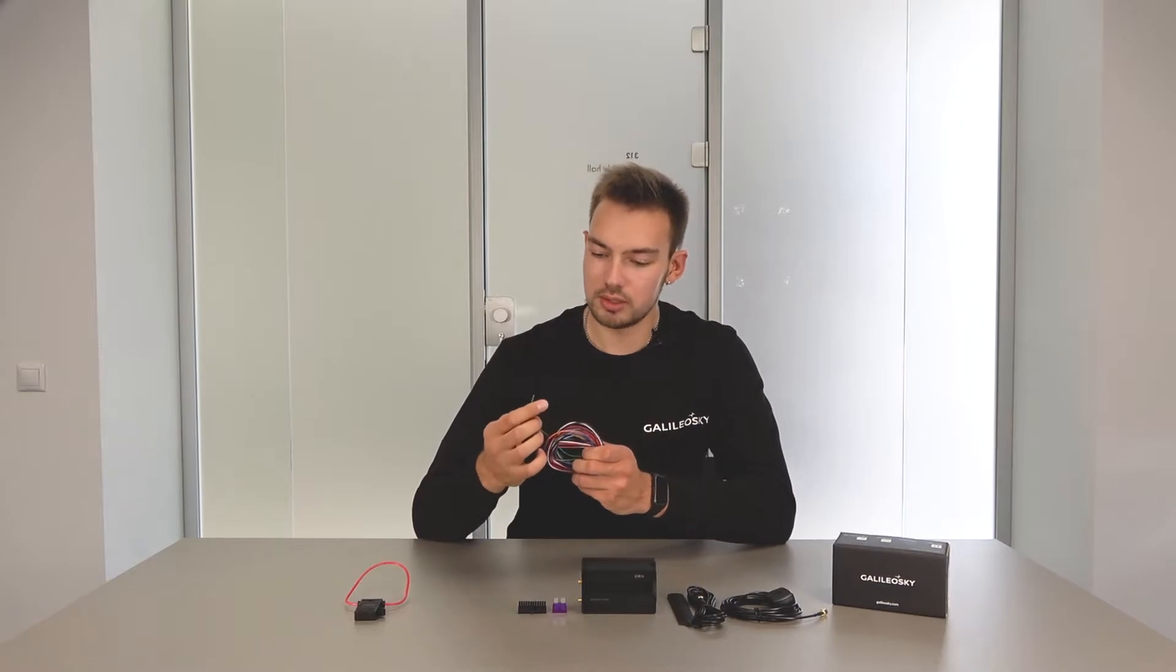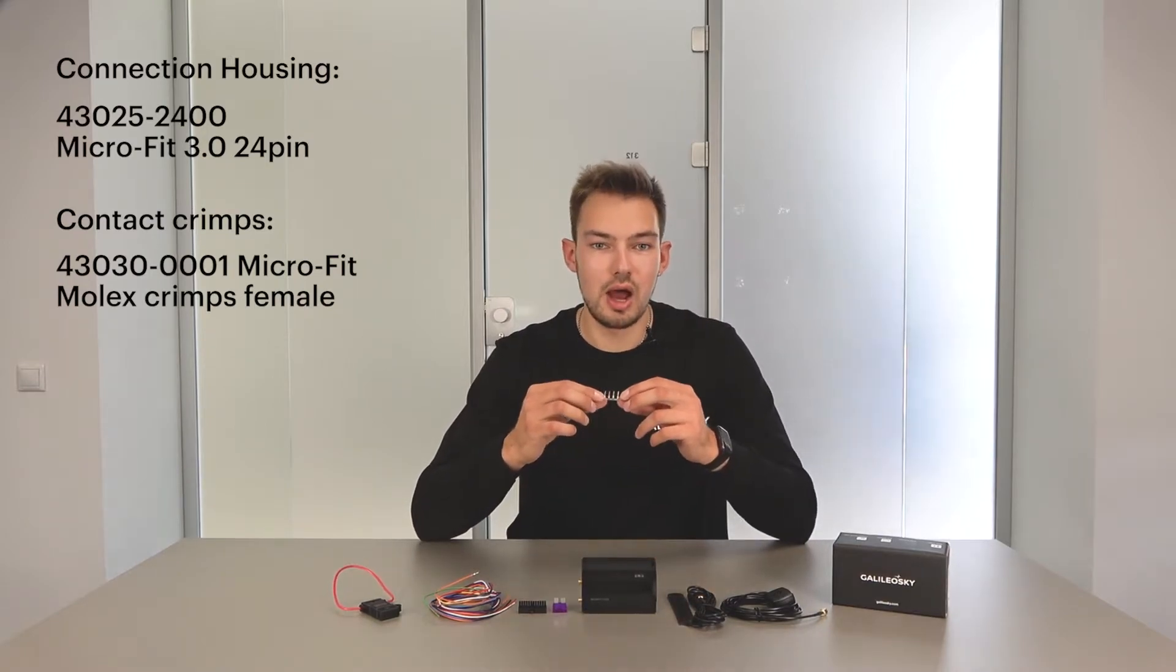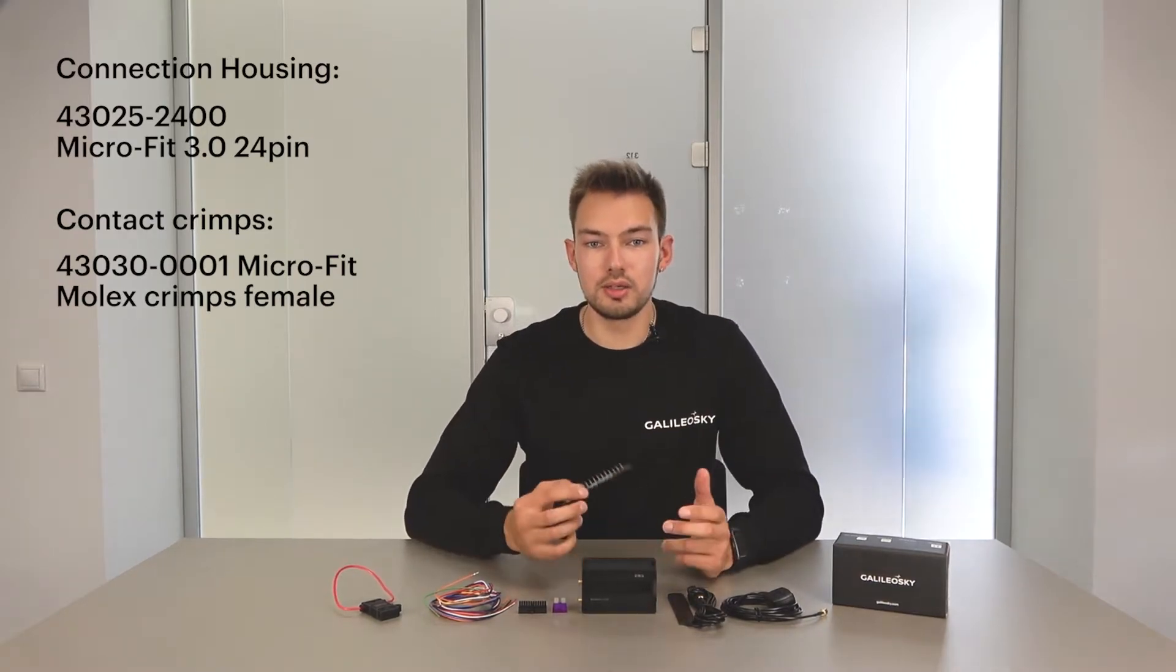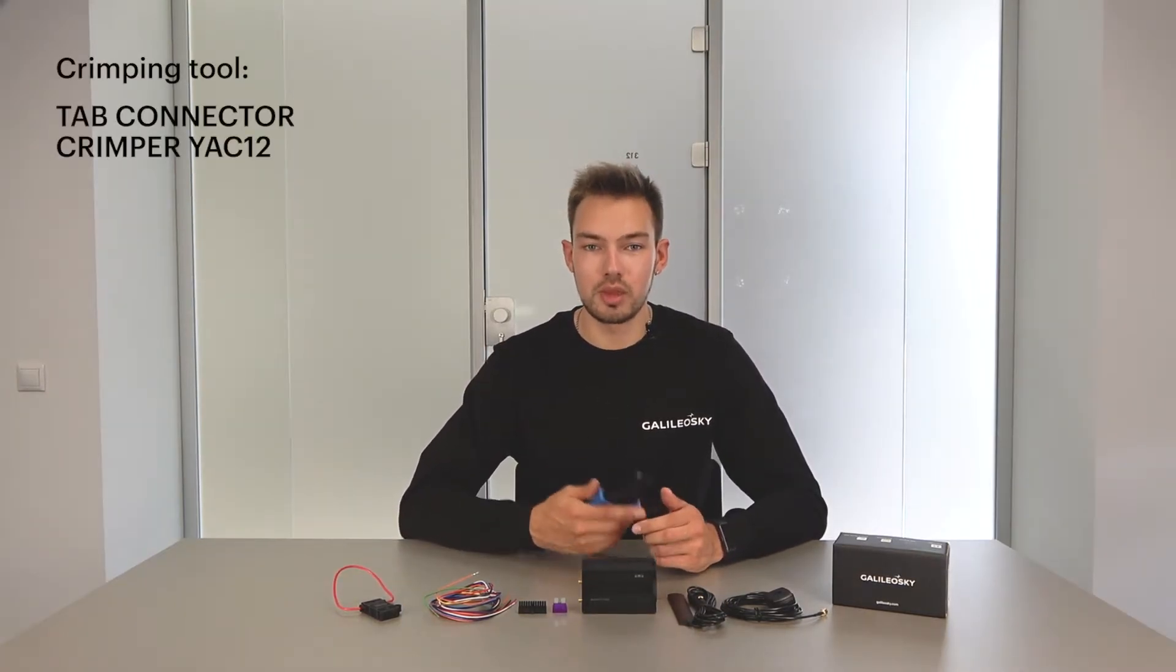Pay attention to the stripped wires ends. Here it is. For crimping and connecting to the block, molex metal lugs are suitable. They are designed to fix the crimped wire in the block. You will need a special tool to crimp this ferrule. Here it is.